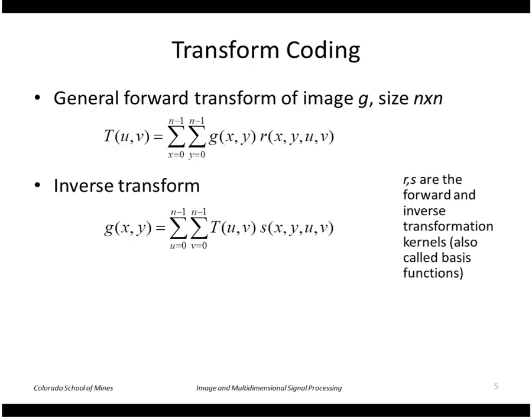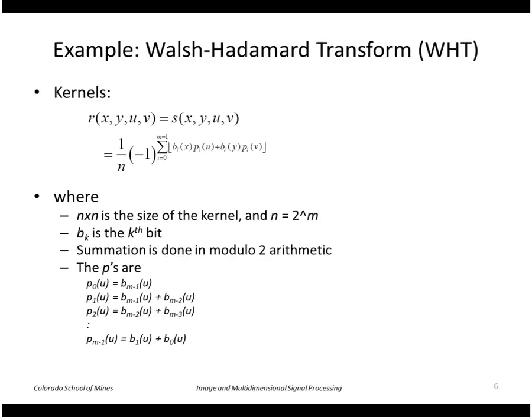An example of this would be the Fourier transform which we've seen before. In this case, the forward transform are these exponents: e to the minus j 2π(ux + vy), and the inverse transform is e to the plus j 2π(ux + vy), etc.